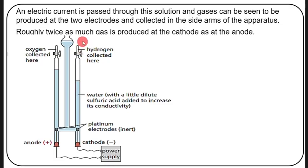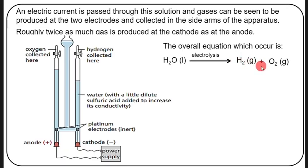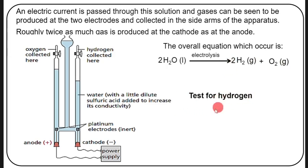More hydrogen is produced than oxygen. The overall equation for the electrolysis of water is: 2H₂O → 2H₂(g) + O₂(g).